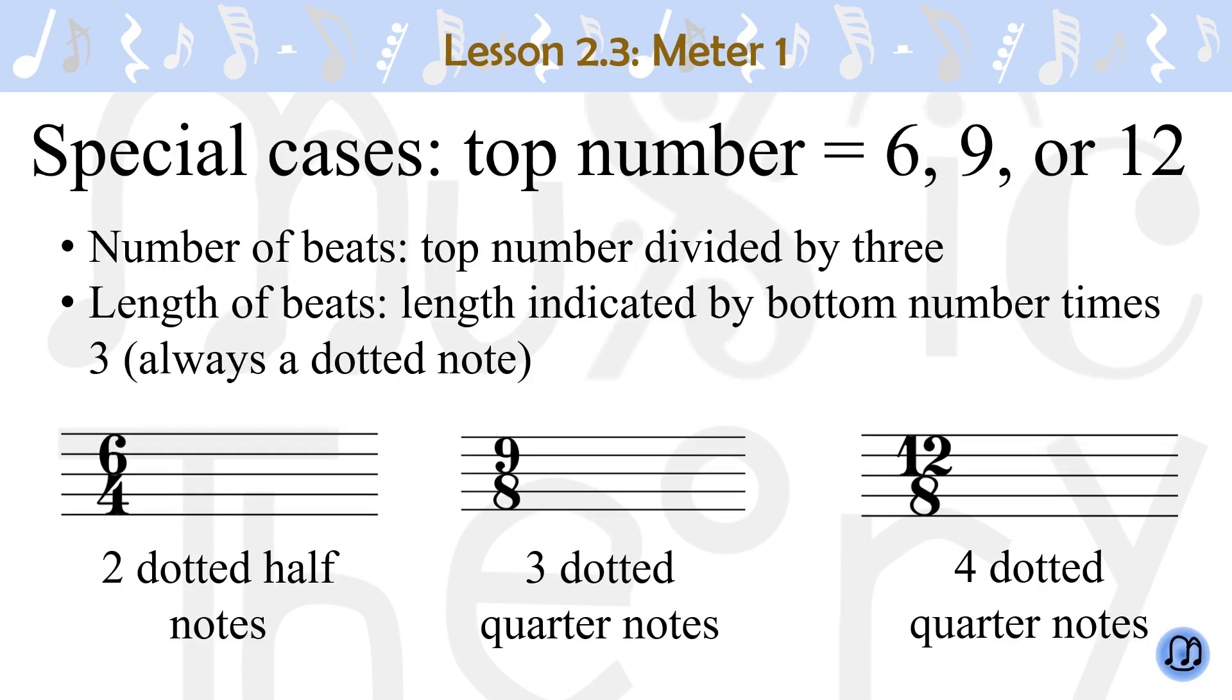Now, let's talk about some special cases. How do we count the beats in length when the top number is 6, 9, or 12? To know how many beats you have in a measure, you take the top number and divide by 3. To know the duration of a beat, we take the length indicated by the bottom number and multiply by 3.